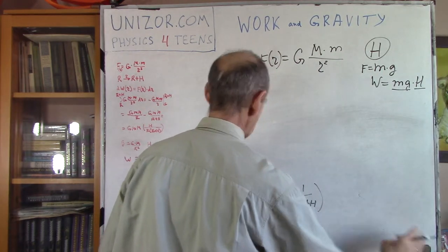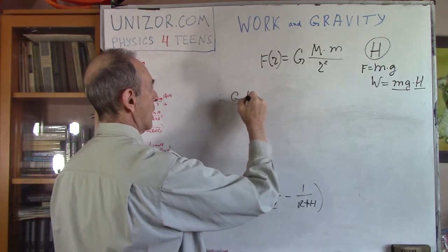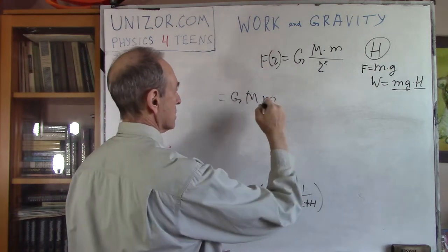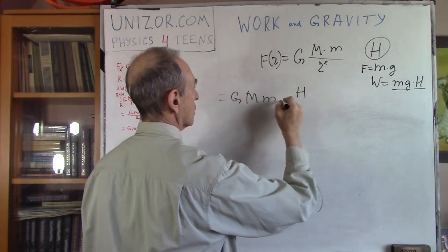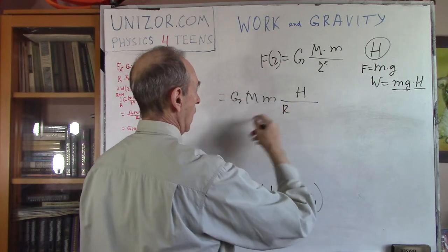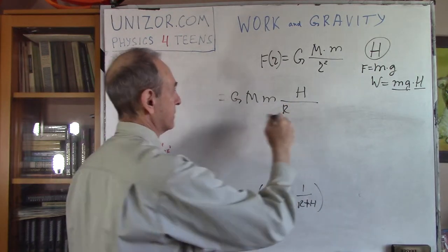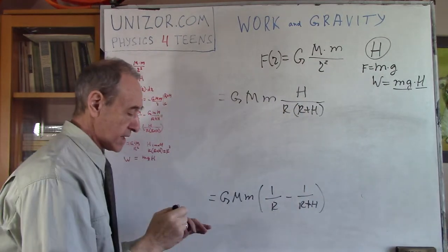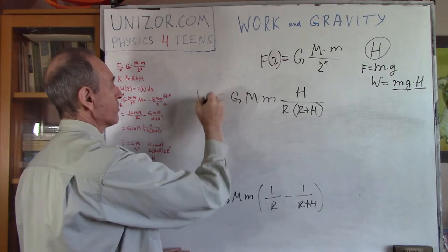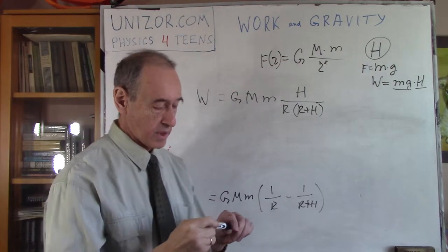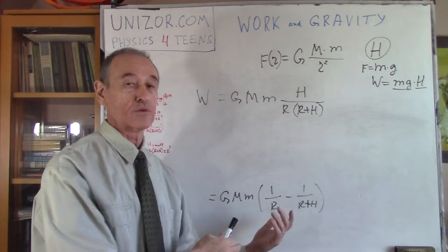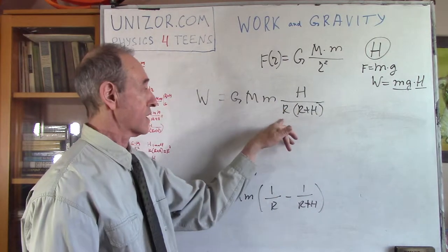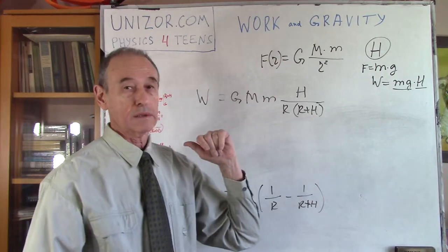So, I'll have a common denominator. So, it would be GMm times r plus h minus r. It would be h times par r plus h. So, this is a total formula for the work performed by some force against the gravity to lift the object off the surface of a planet of a radius r by the height h.